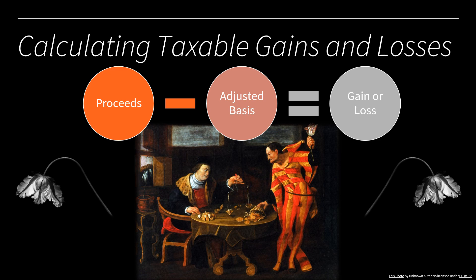As introduced in the last lesson, here again is the formula for calculating a taxable gain or loss. We have the proceeds from the sale — the sales price — minus the adjusted basis. Basis is the cost, and there are things that happen over time that can add to or subtract from that cost. We subtract the adjusted basis from the proceeds, and that determines whether we have a gain or a loss: if the amount is positive we have a gain, if negative we have a loss.